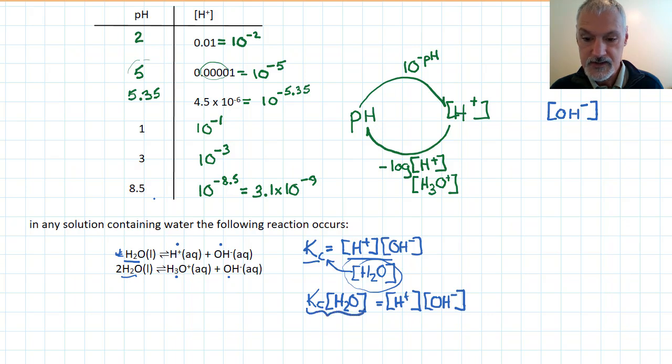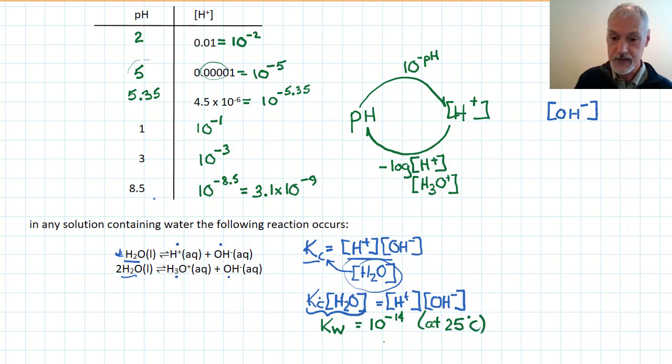This constant, so I have one constant times another when put together, they form what we call the ion product for water, sometimes referred to as Kw. And this equals 10 to the minus 14. And like all equilibrium constants, it's true at only a specific temperature, in this case 25 degrees C. If I change the temperature, I change the value of that constant.